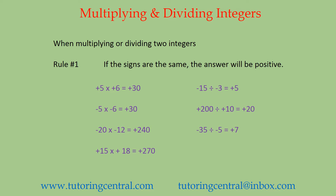Negative 15 divided by negative 3 equals positive 5 — the two signs are negative but the answer is positive. Positive 200 divided by positive 10 equals positive 20, again a straightforward division question. Normally we wouldn't even put in the signs, but because I'm discussing integers with negatives and positives I put all the signs in. Negative 35 divided by negative 5 equals positive 7.